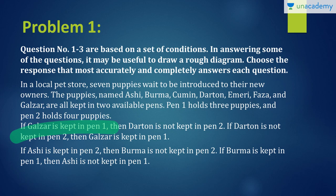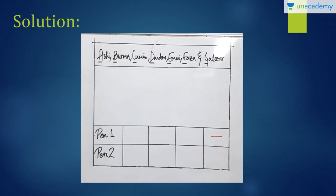If Galzar is kept in pen 1, okay, I'll stop here first and we'll make a tabular structure where I have put Ashi, Burma, Cumin, Dartan, Emeri, Faza and Galzar. I'll be using just the first letter of their names to denote them here. So here is the representation of the table where I've placed two pens and there are three spots empty in pen 1 because three puppies occupy pen 1 and four spots for pen 2. Now we'll have to read the clues and arrange this in the pens.